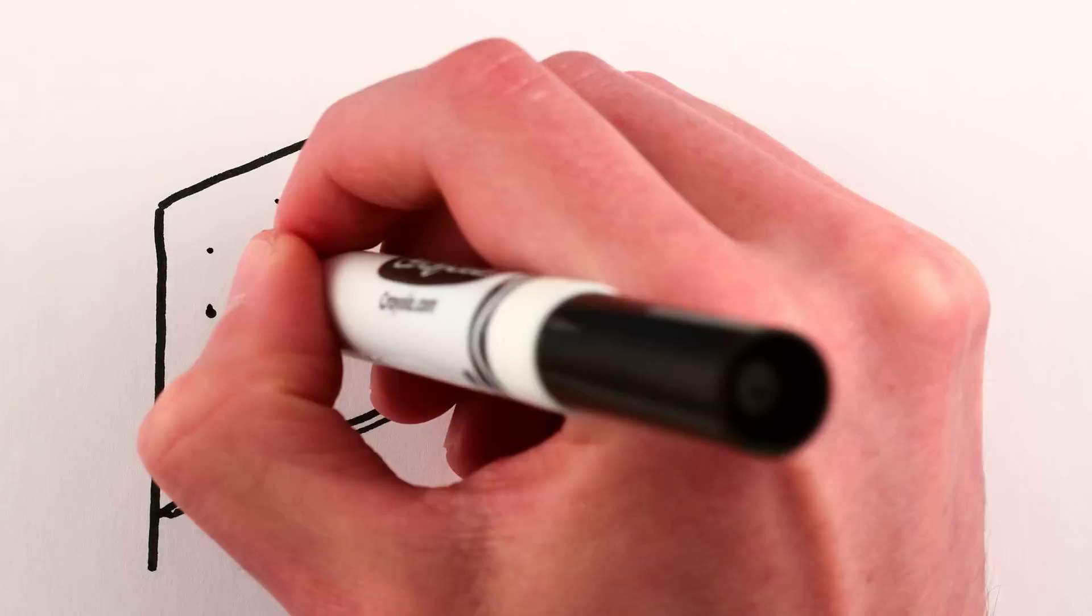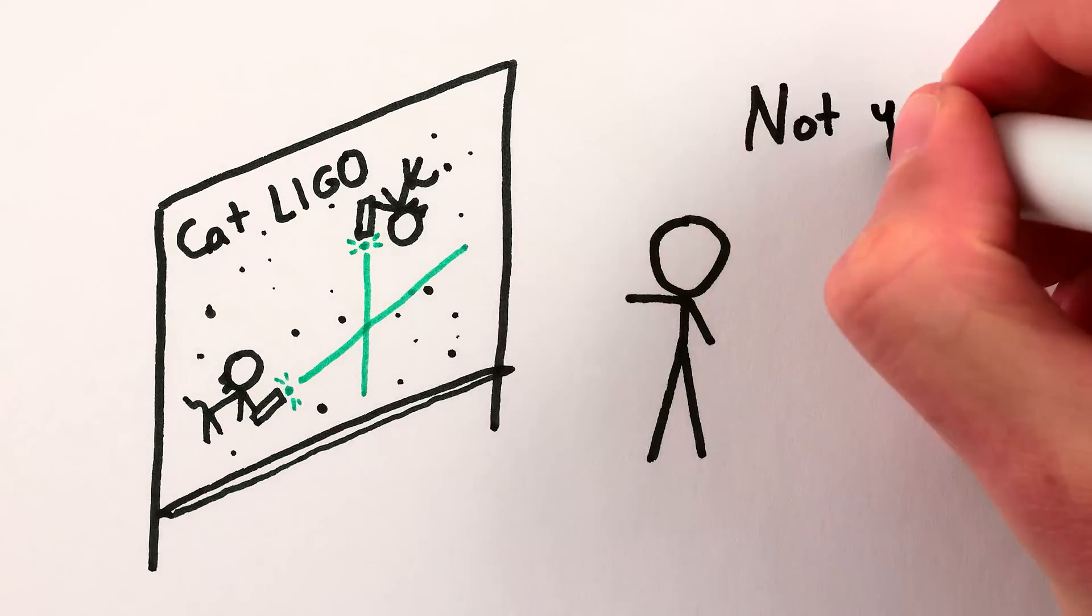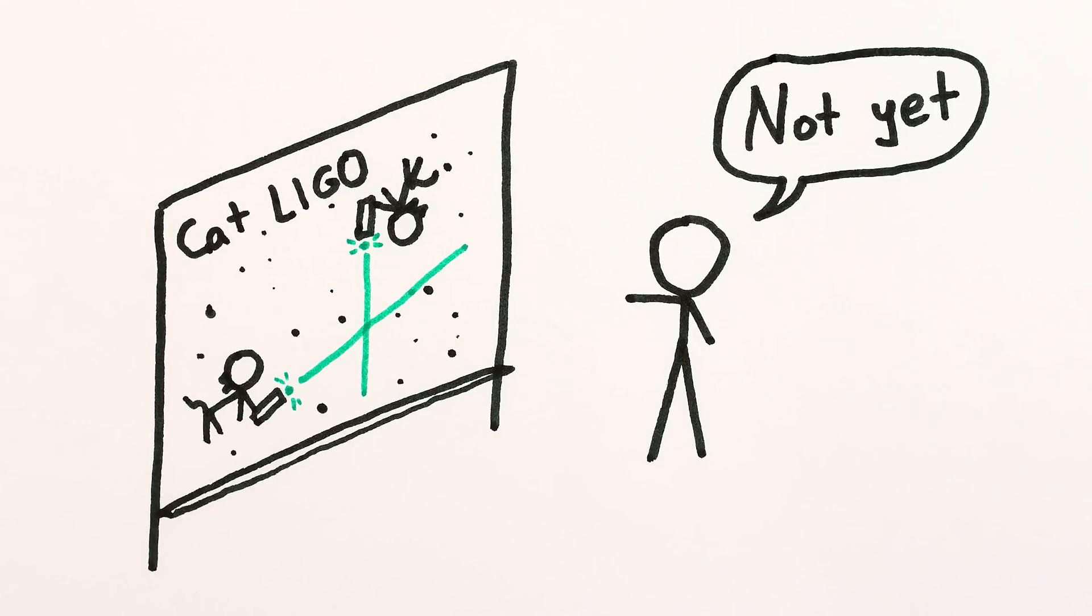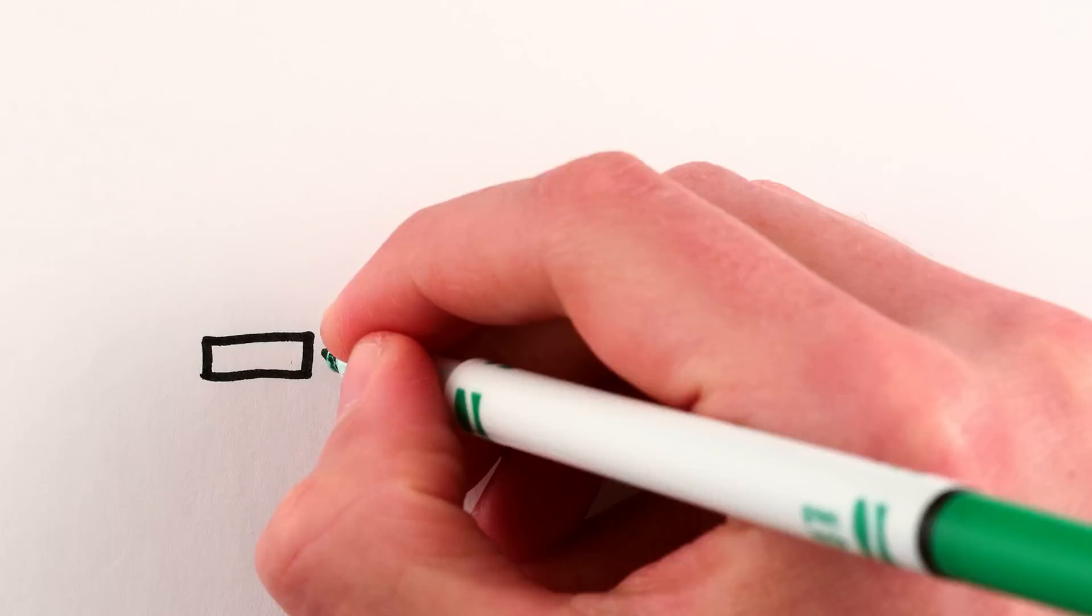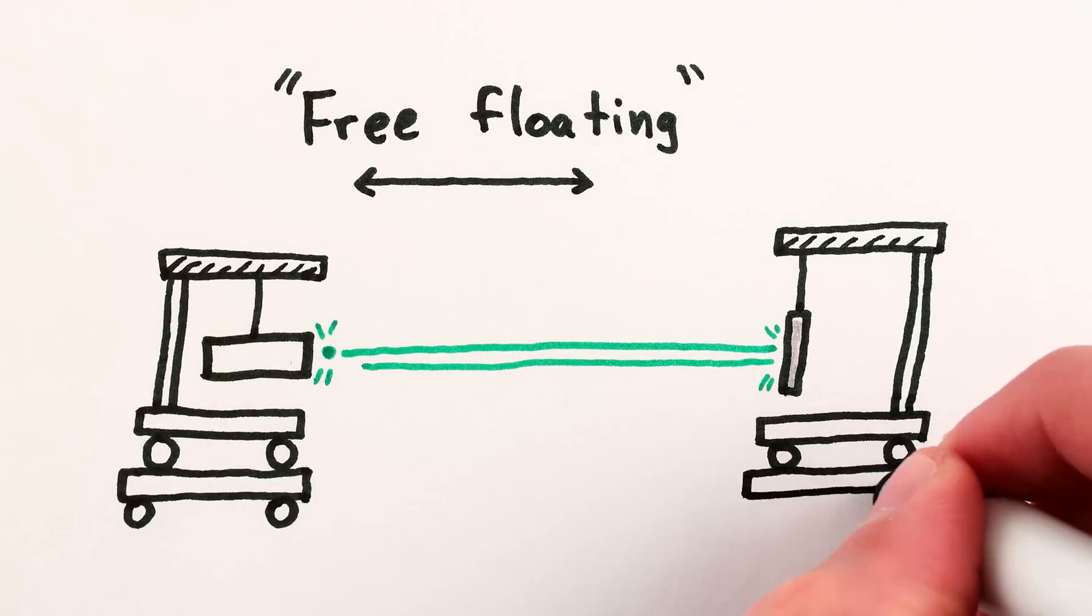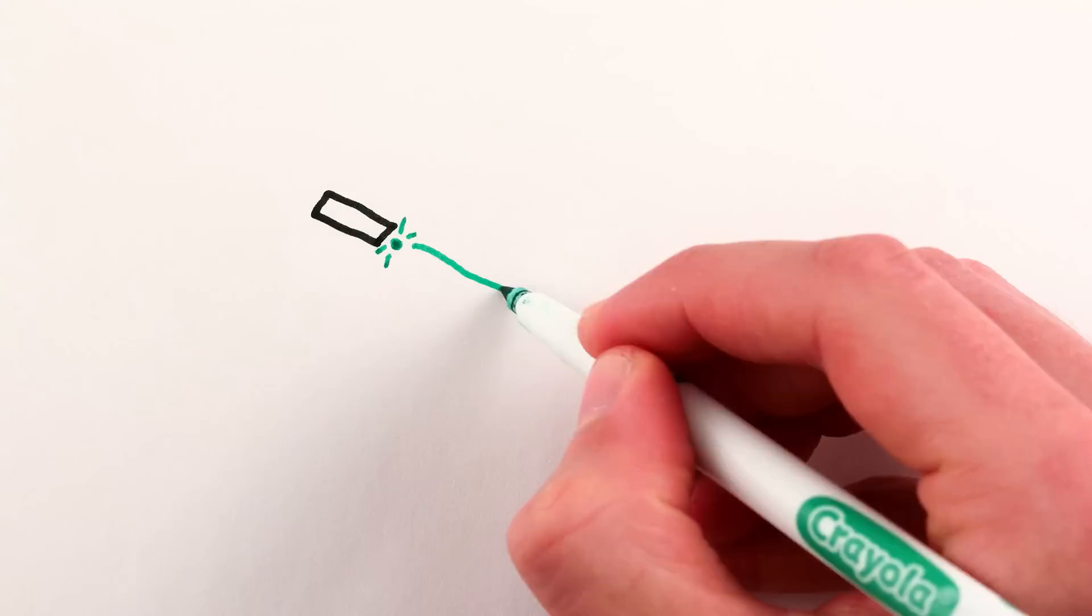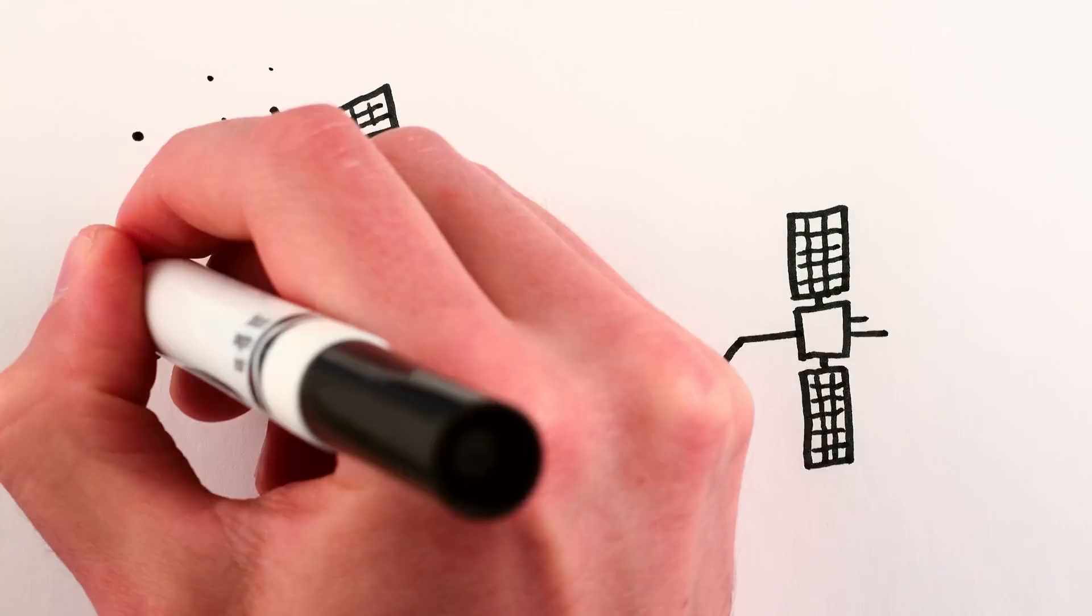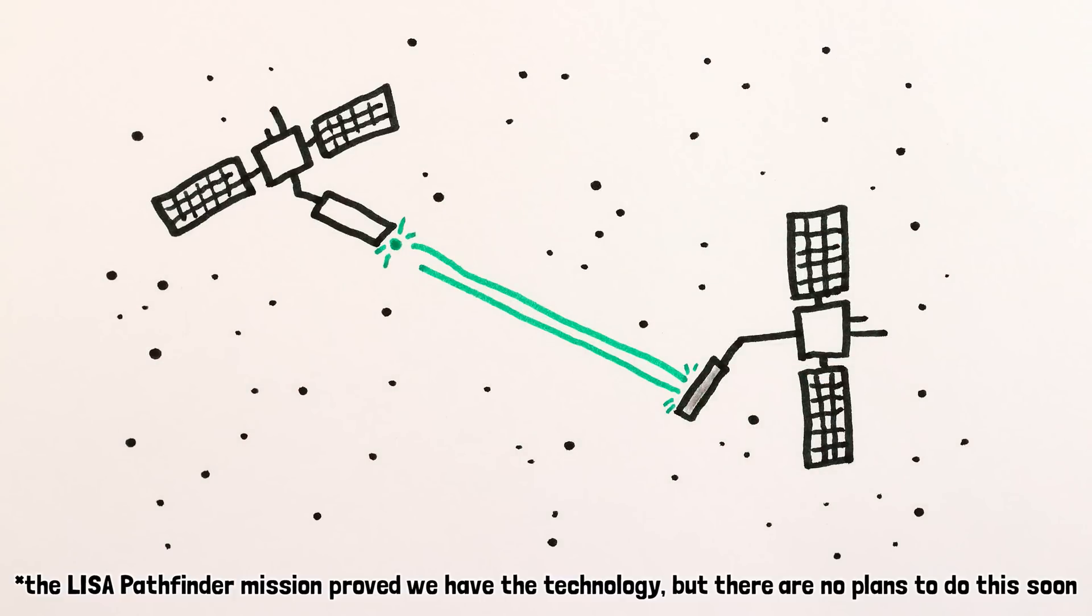In practice, physicists don't actually measure gravitational waves with free-floating cats. They use very, very fancy expensive mirrors, which are effectively free-floating in one direction because they're hung on pendulums suspended on isolation tables suspended on isolation tables, or which are actually free-floating because they're attached to satellites floating in space, though this hasn't been done yet.